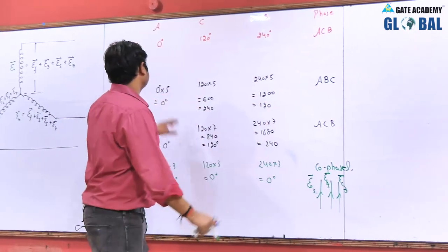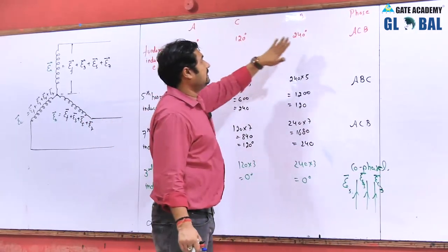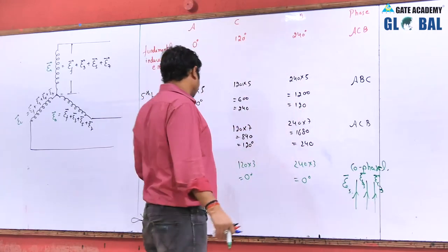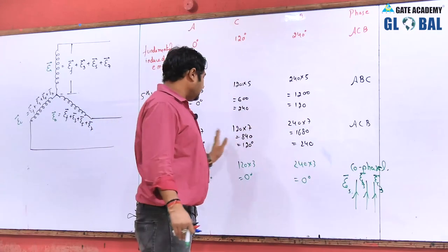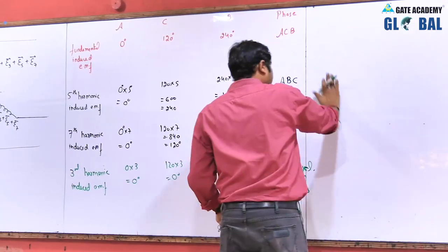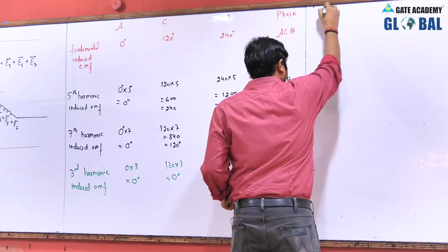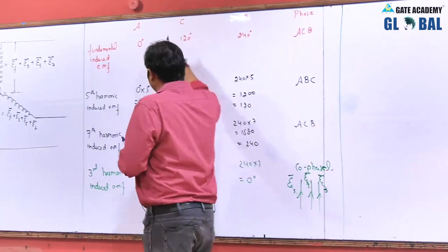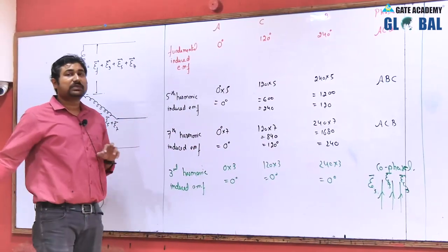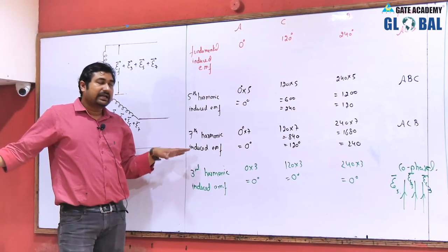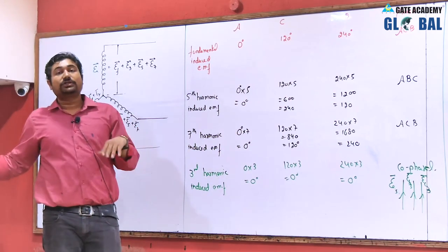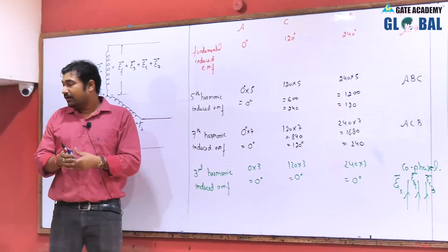In the case of the fundamental, EA, EC, EB appear sequentially; for the fifth harmonic, EA, EB, EC in sequence; and for the seventh, EA, EC, EB in sequence. The fundamental induced EMF and these harmonics differ in rotation direction. To summarize: all 6M plus 1 odd harmonic voltages have the same phase sequence as the fundamental; all 6M minus 1 odd harmonic voltages are opposite in phase sequence; and all triplen harmonics are cophasal.